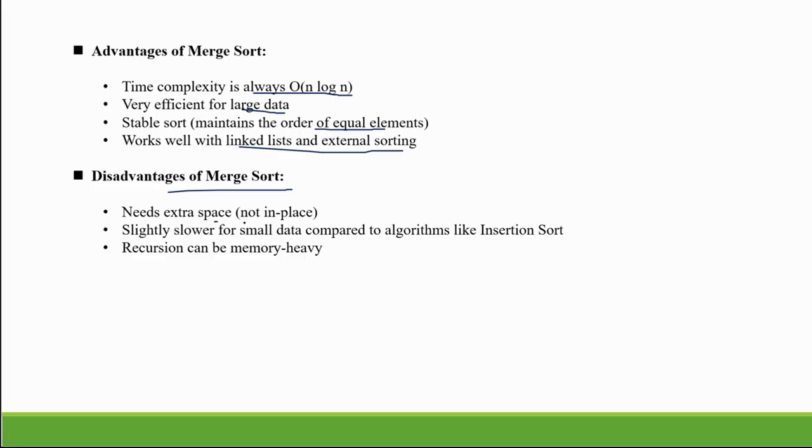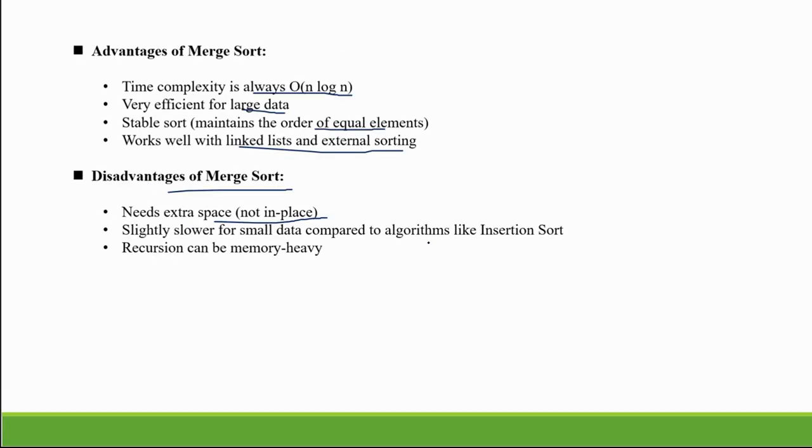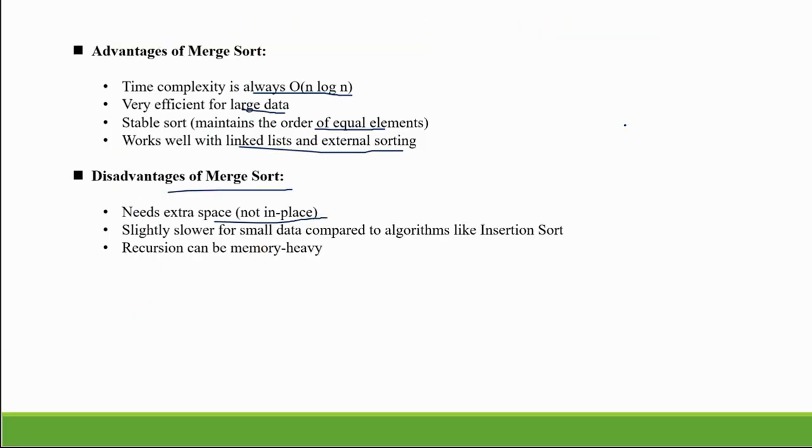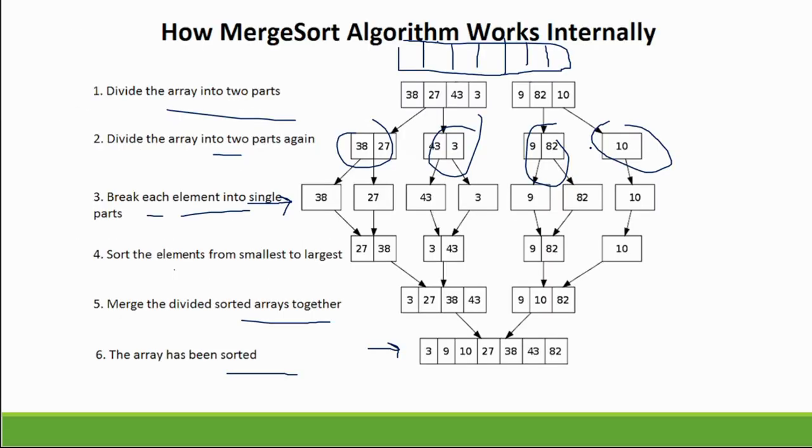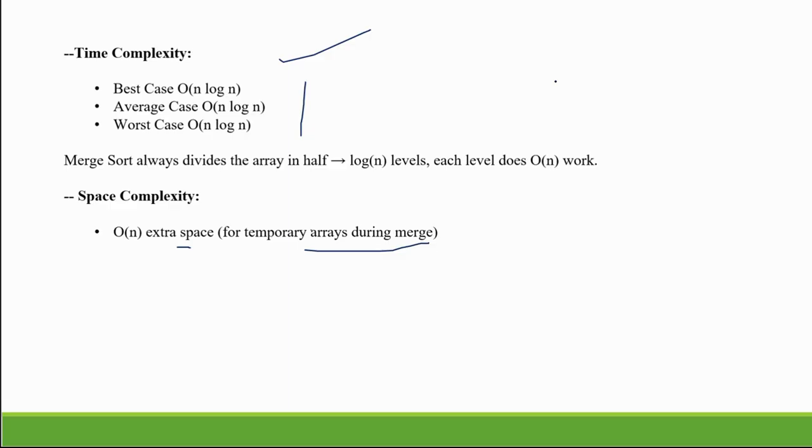Disadvantages of merge sort: We need extra space, not in place. You have extra space because for a temporary array using merging. It is a small data set - when the elements are low in the array, then it will get slow, it will get difficult to divide. Recursion can be memory heavy.